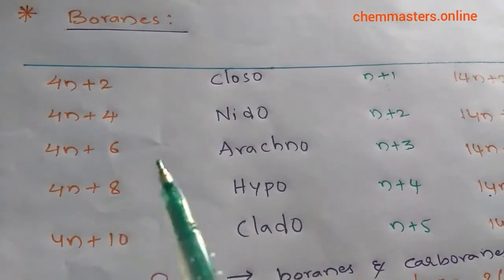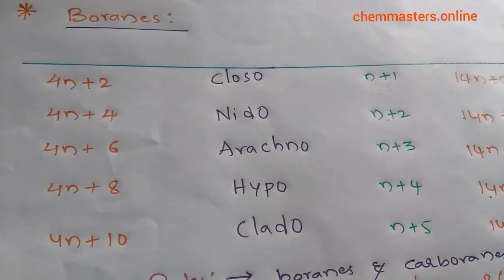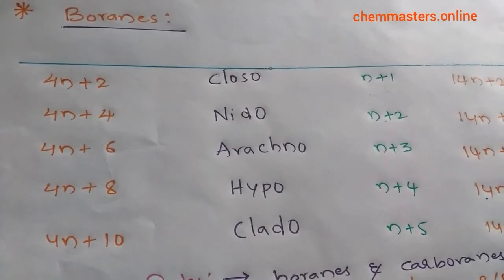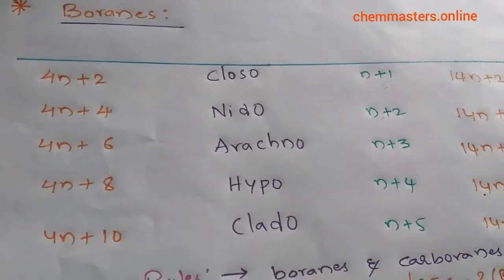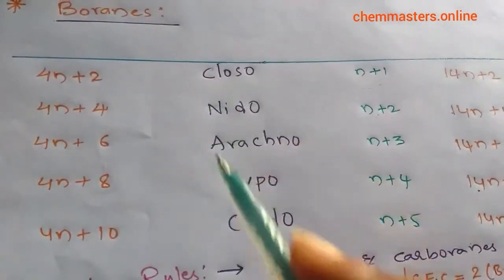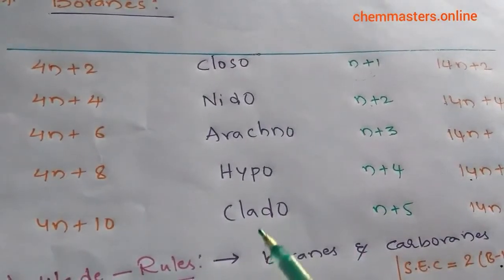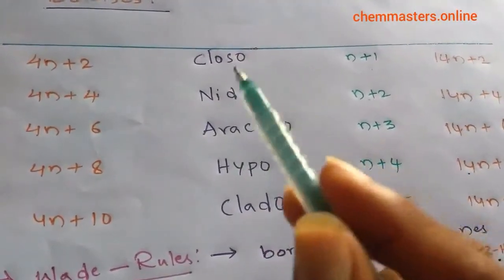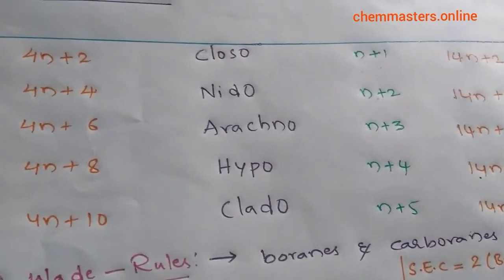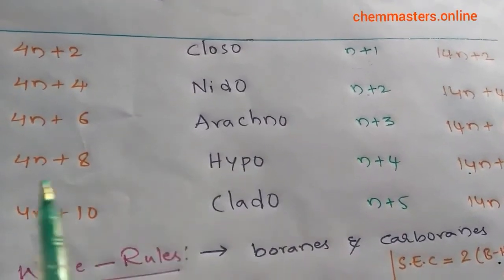We are going to discuss boranes, which is a very important topic for the CSIR and GATE exams. We have the important borane clusters: closo, nido, arachno, hypo, and clado. The most common are closo, nido, and arachno, while hypo and clado are rare in nature.